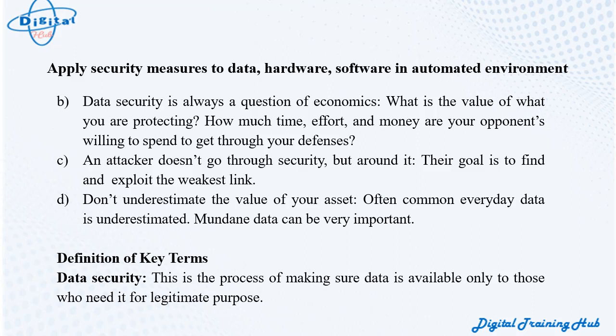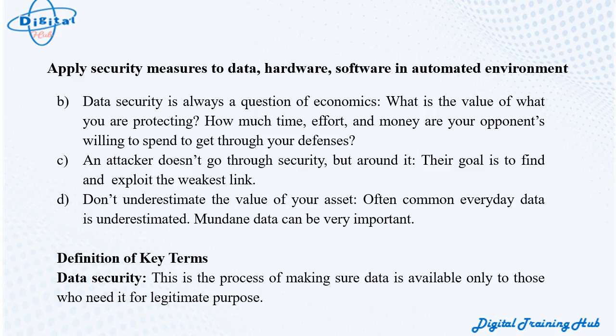Definition of key terms. Data security: the process of making sure data is available only to those who need it for a legitimate purpose. Data: information that has been translated into a form efficient for movement or processing. Data privacy (information privacy): the aspect of information technology that deals with the ability of an organization or individual to determine what data in a computer system can be shared with third parties. Security threats: the process of an illegal entity gaining access to a company's data or information. Control measures: any measure taken to eliminate or reduce the risk of security threats. Cyber criminals: illegal users who use many different methods to lure you into parting with your confidential personal or business information.